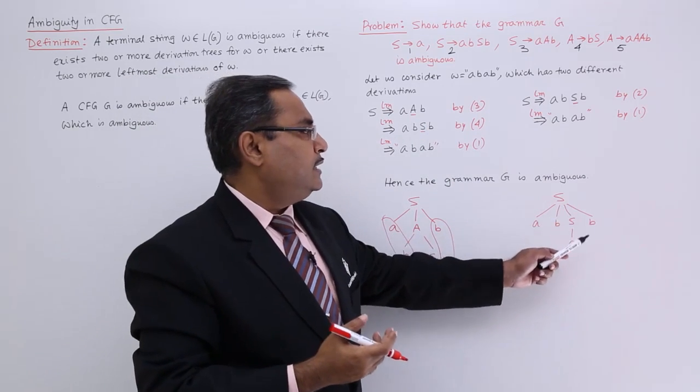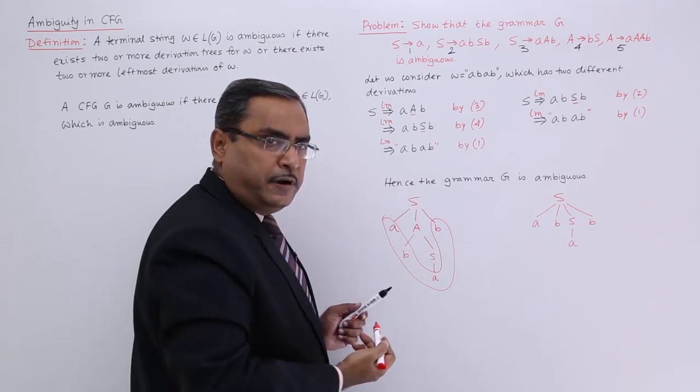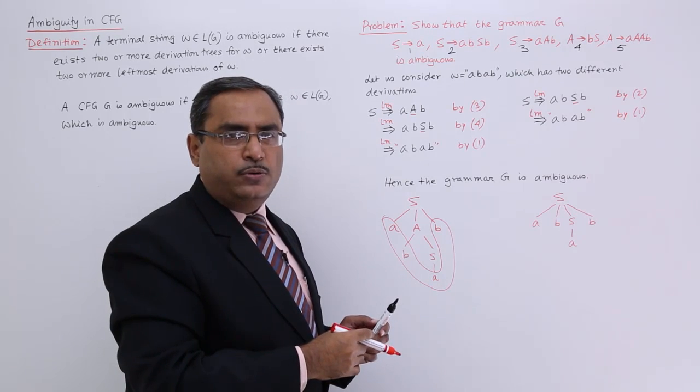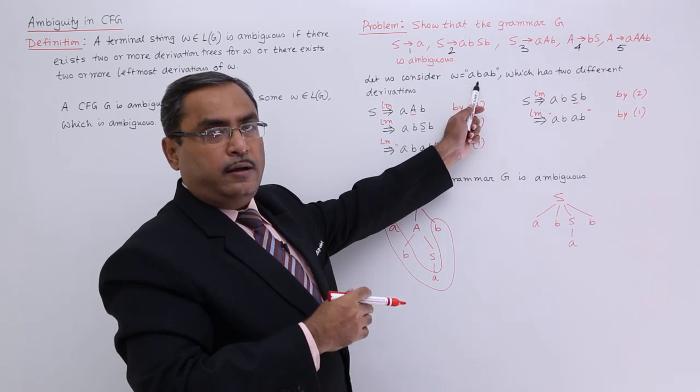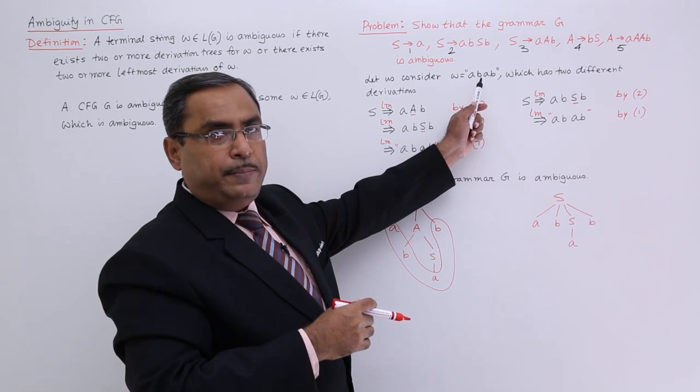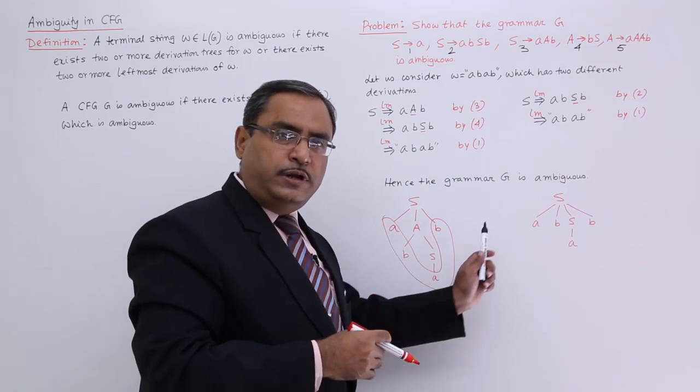Now see, there is a respective derivation tree, and these two trees are different obviously, because the grammar is ambiguous. Why? Because we got one string w belongs to L(G) for which we are having two different derivations and respective derivation trees.